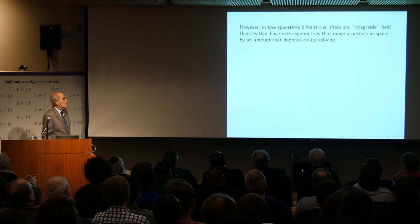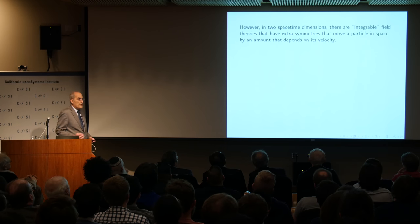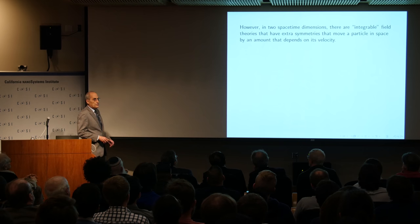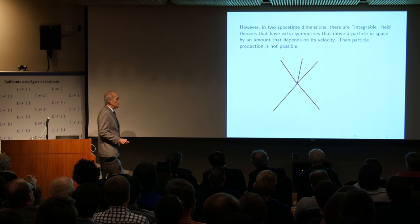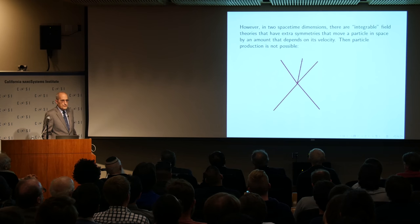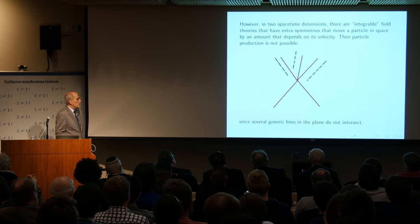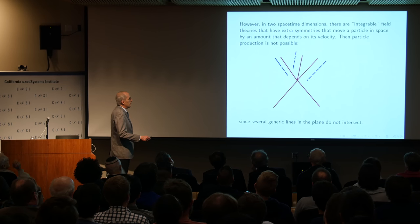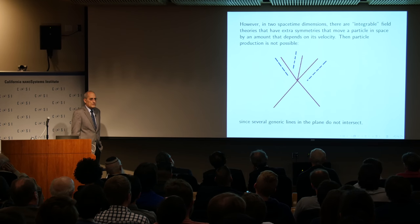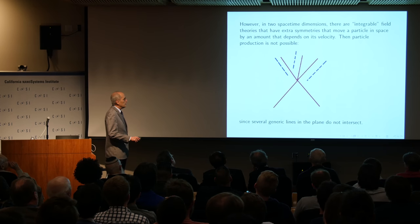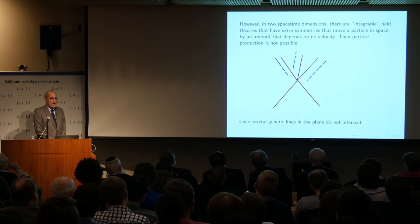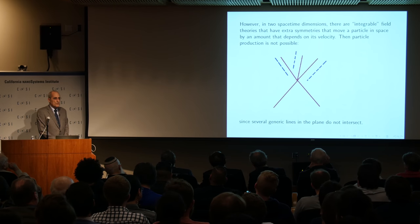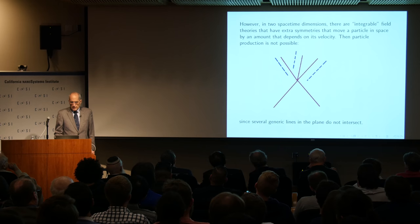In two space-time dimensions, there are integrable field theories that have extra symmetries, and these extra symmetries move a particle in space by an amount that depends on its velocity. Particle creation is then not possible. Here's a process with two going to three: I apply a symmetry that moves a particle by an amount depending on its slope. The three outgoing parallel lines would not meet at a common point in space, so the process isn't possible. Since several generic lines in the plane do not intersect, a theory with such a symmetry will not have particle creation.